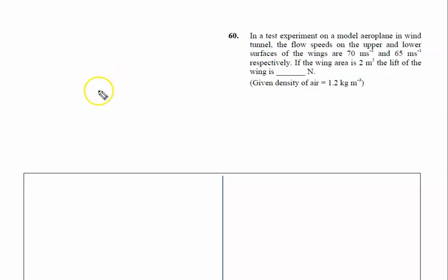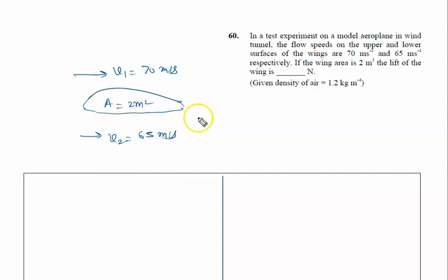In a test experiment on a model aeroplane in a wind tunnel, the flow speeds on the upper and lower surfaces of the wings are 70 m/s and 65 m/s respectively. If the wing area is 2 m², we need to calculate the lift force on the wing.